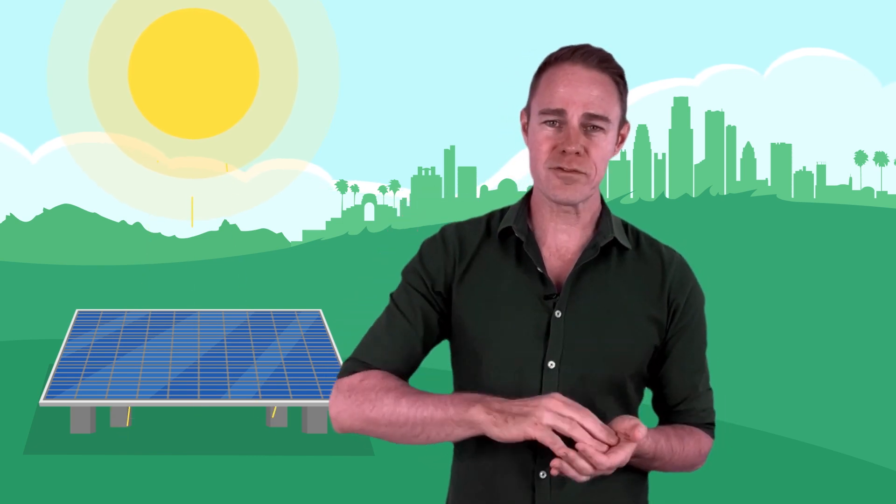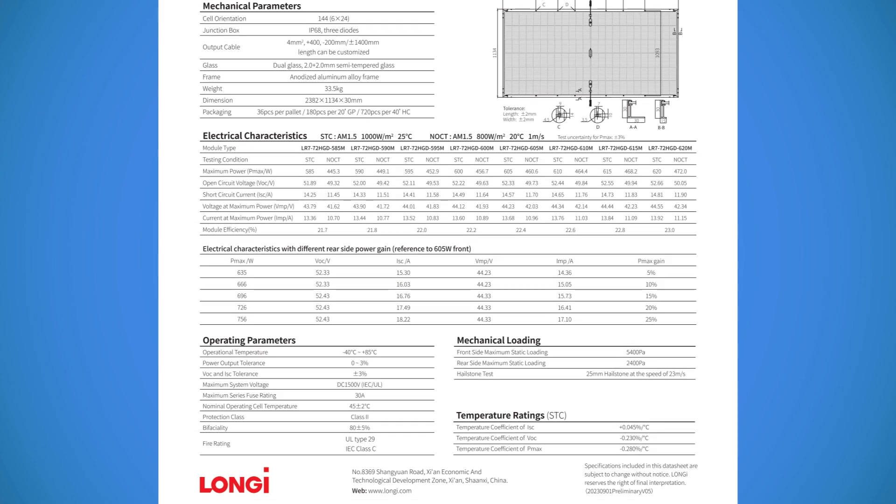Now here I also have to bring up bifacial solar panels, which are very common in large ground systems. Bifacial or double glass panels have solar cells on the rear side. Light goes through the panel, reflects from the ground, and the back side contributes to the production on the front. On the data sheets, manufacturers write that the rear side can produce up to 25% of what the front side is capable of.